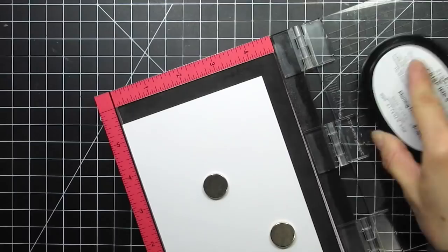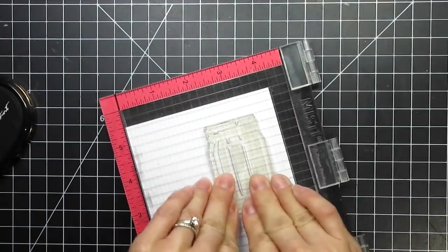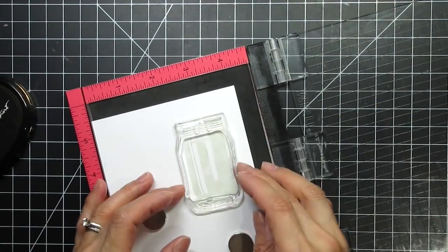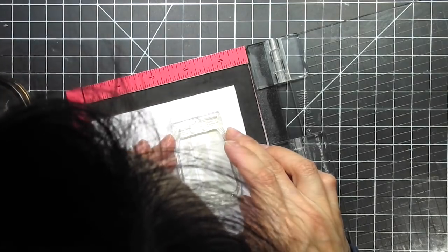The jar itself is two layers, just like the leaves from Daffodil Dreams. I'm only using the jar part for my card, but the set also comes with a waterline and a lid which has two layers.